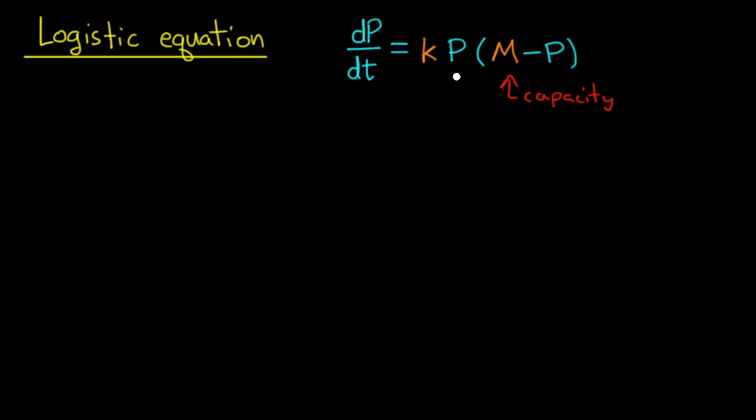The fact that I have a product here says that the population grows more slowly when it's small, if I have P close to zero. And it also grows more slowly when M minus P is small, so the population is close to its maximum capacity.